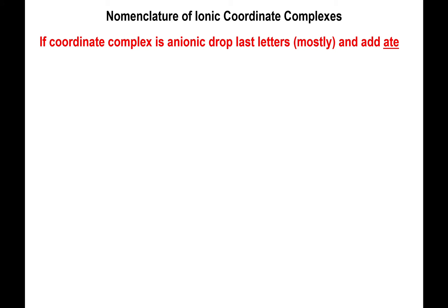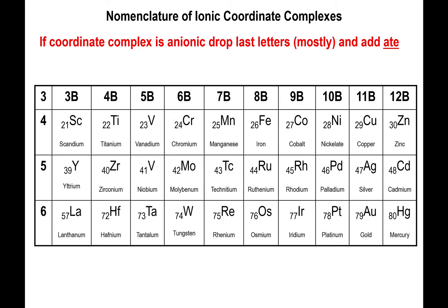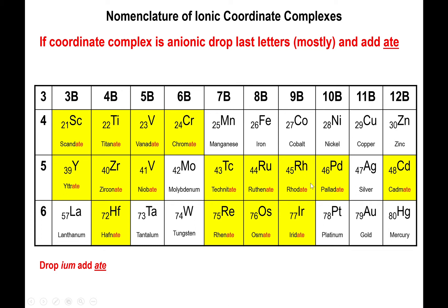Usually the way this goes is that for the most part you're going to drop a few letters at the end of the metal and add the suffix -ate. When you look at the vast majority of the transition metals, for all the ones I'm highlighting here in yellow, you literally drop the -ium ending of the metal. So instead of calling it chromium you call it chromate, instead of vanadium you call it vanadate, instead of titanium now it's titanate, rhenate, osmate, iridate, rhodate, palladate, cadmate. Those are the simple ones.